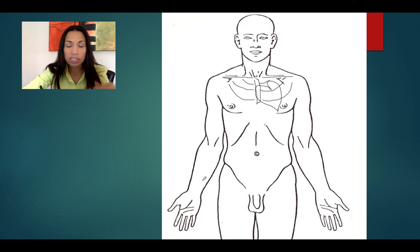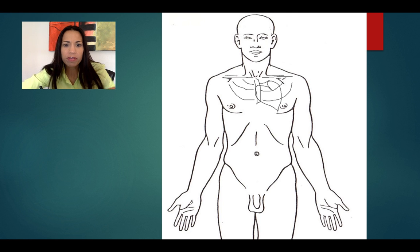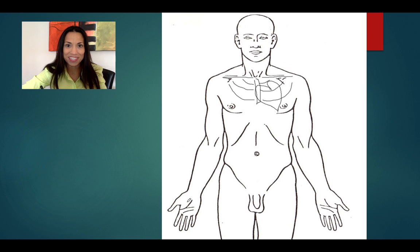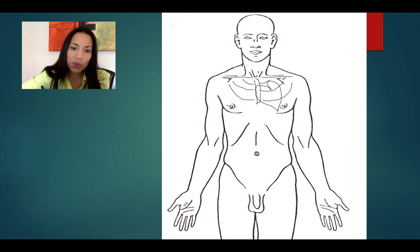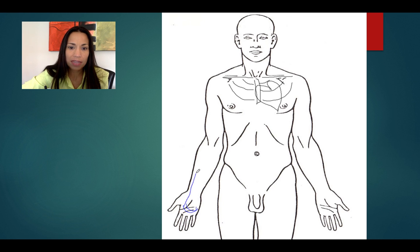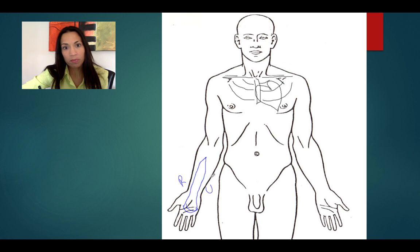The deep veins have almost the same organization or pattern as the arteries. Starting from distal towards the heart, that's the direction of blood flow. We have two palmar arches — the deep and the superficial — and they collect blood to the radial vein on the lateral side and to the ulnar vein on the ulnar or medial side.